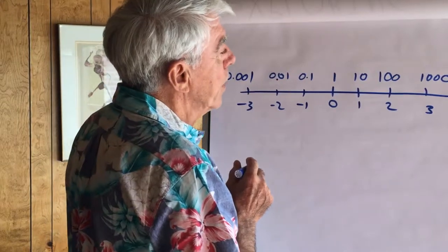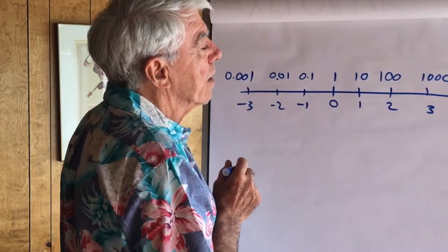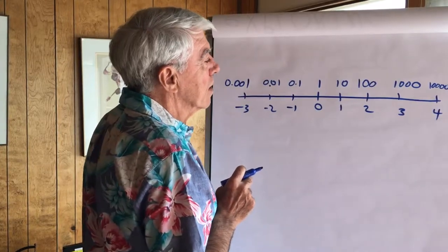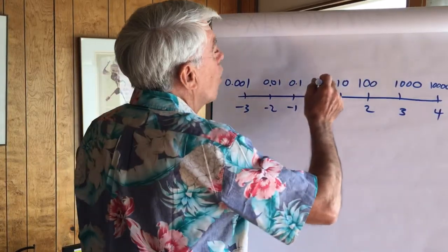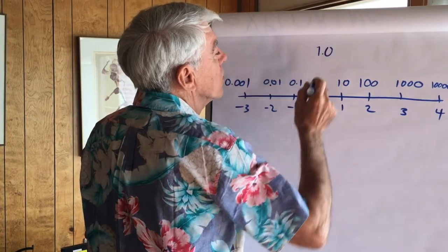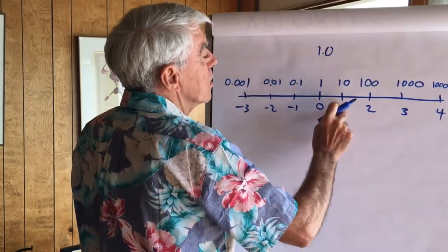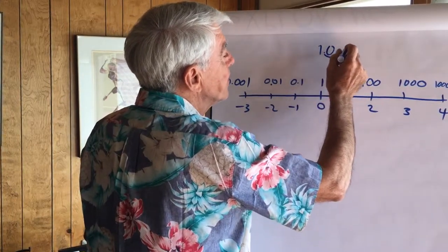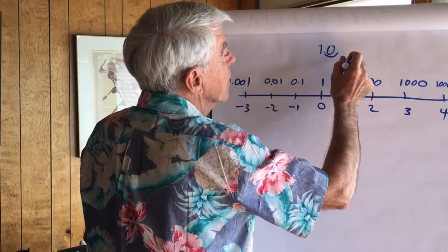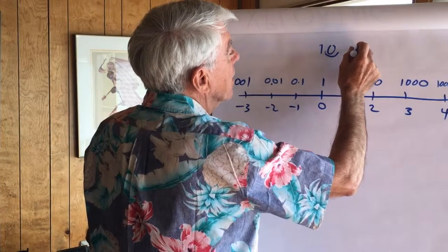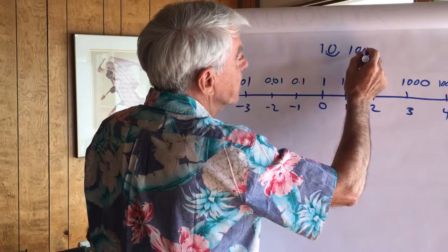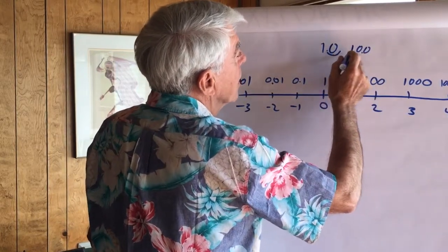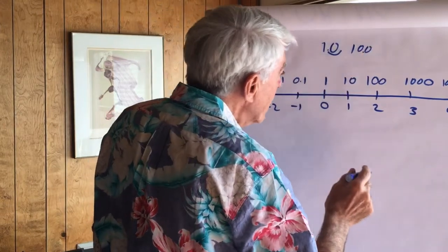A better rule would be to say that the exponent tells you how many places to move the decimal point. This 1 has an implicit decimal point, 1.0. So, when we have an exponent of 1, it says move it over one place. And now we have 10. And if we had 10, like that, the 2 tells you to move it over an additional place or two places from the 1.0.